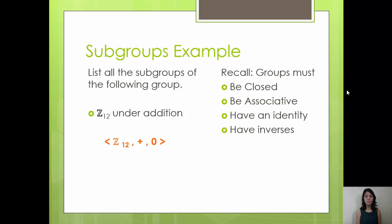Let's go ahead and work with the group Z mod 12 under addition. Recall that those are the integers 0 through 11, with addition mod 12, meaning that once we reach 11, we go back to 0. I want you to pause this video and try to list out the subgroups of Z12 under addition. One tip: look at what groups must have, particularly that they must have an identity. Work out what the identity element for Z12 under addition is and make sure that's in all of your subgroups. Also make sure all elements have inverses and the set is closed — associativity will follow from Z12 being a group.